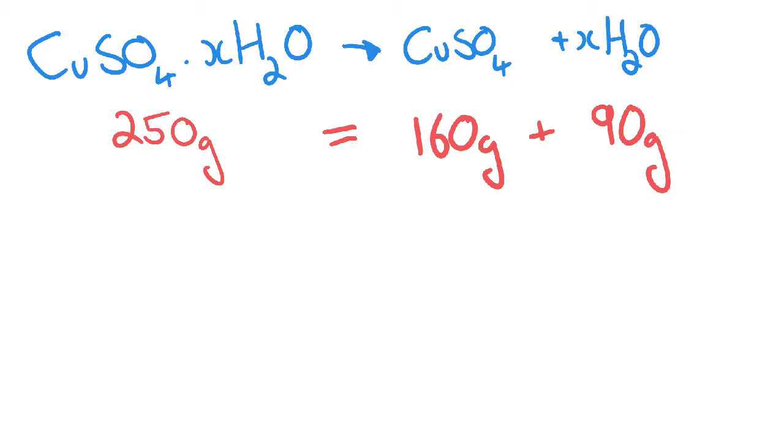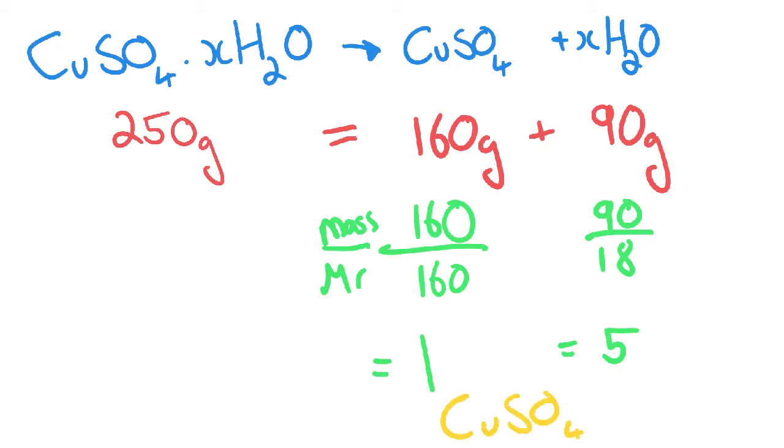So my moles is my mass divided by my MR. So in this case, that's going to be 160 divided by 160, which is the MR of my copper sulfate, so that's going to equal 1. And for my water, it is 90 divided by the MR of water, and the MR of water is 18, which is equal to 5. So what that tells me is my copper sulfate is in a 1 to 5 ratio, so therefore my formula for my copper sulfate must be CuSO4·5H2O.